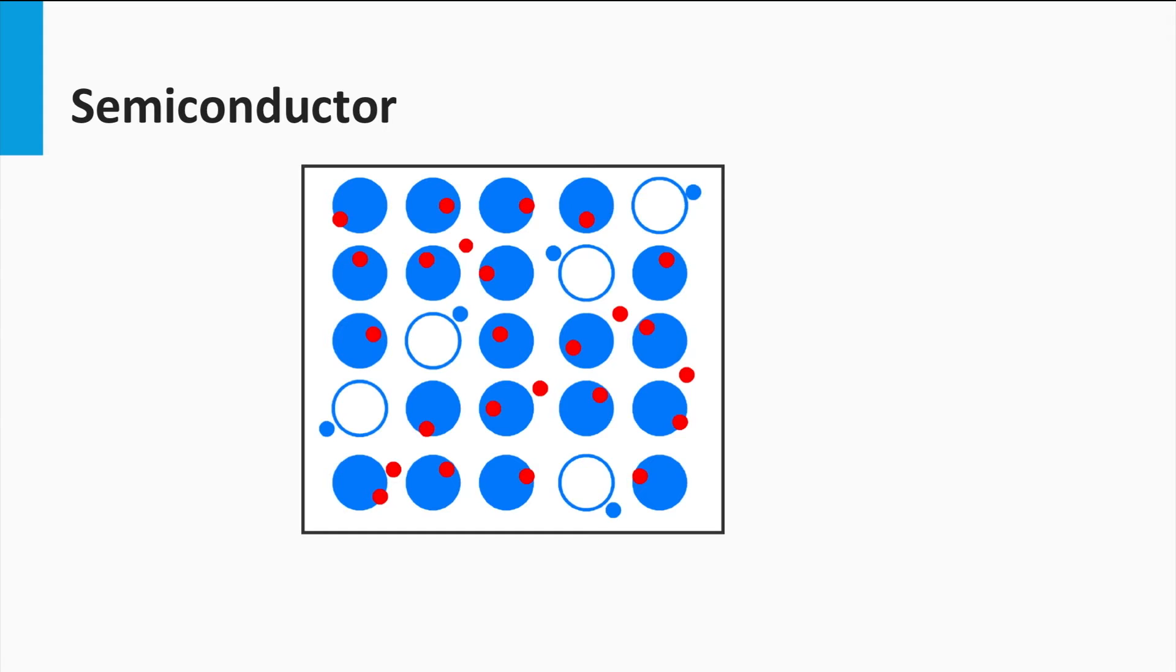These holes are able to move around just like the electrons. As a result, the charge transport in a semiconductor is facilitated by negatively charged electrons and positively charged holes.